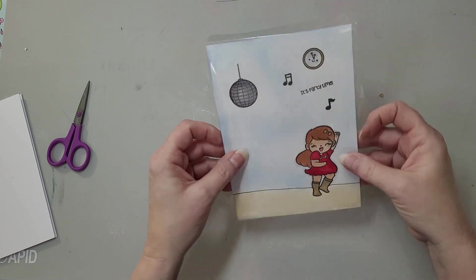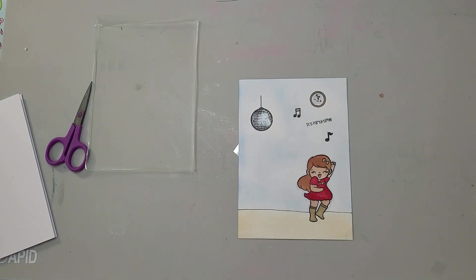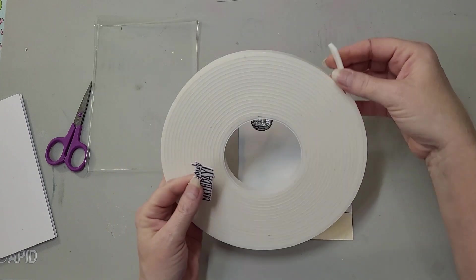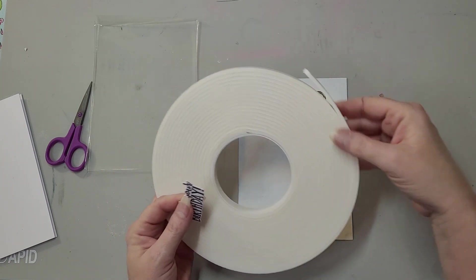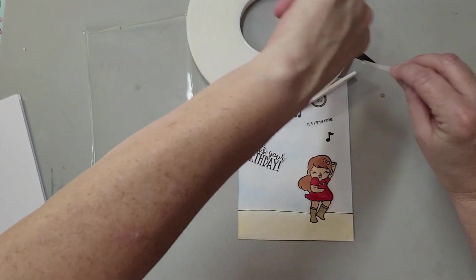Alright, so now what we want to do is we want to take some one-eighth inch thick foam. This is your regular thickness you would use for a shaker card, and I'm going to put it behind the It's Your Birthday.